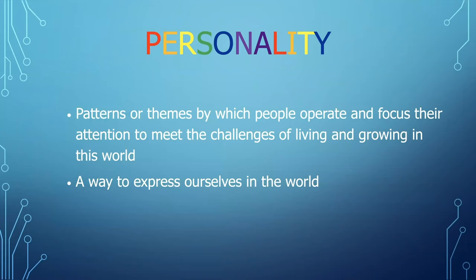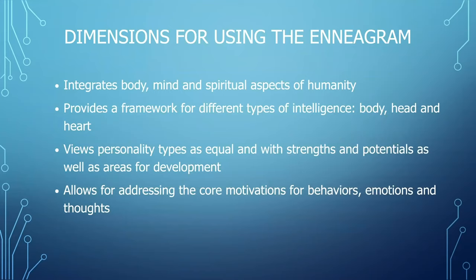Personality is these nine types with distinct patterns or themes by which people operate or focus their attention to meet the challenges of living and growing in the world — a strategy by which each type has decided to manage the world. The Enneagram integrates body, mind, and spiritual aspects of each type. It provides a framework for different types of intelligence — body, head, and heart — and views personality types as equal, with strengths and potentials as well as areas for development. There is not one type that is any more or less healthy than another.